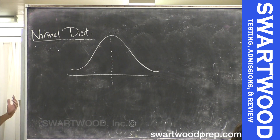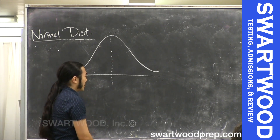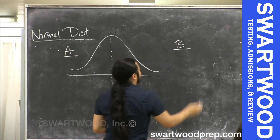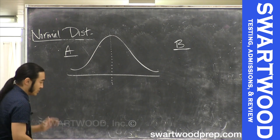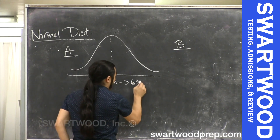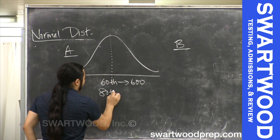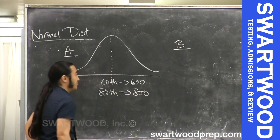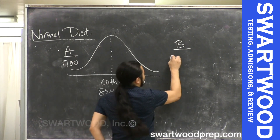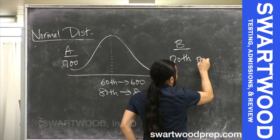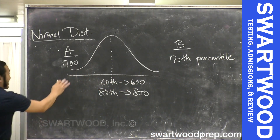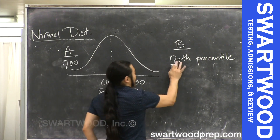So what's a hard problem? You have a normal distribution. Column A versus Column B. The information they give you: the 60th percentile is the score 600, the 80th percentile is the score 800. Column B: the 70th percentile at score 700. The worst it would get — it's not that bad, but it is annoying — because it's somewhat conceptual.